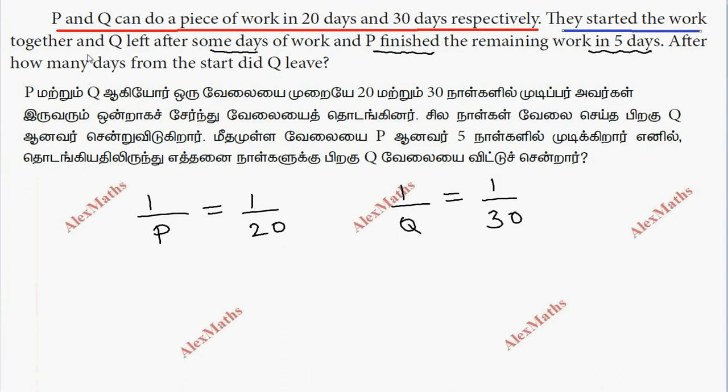One day work of P plus one day work of Q. We have the values: 1 by 20 plus 1 by 30.